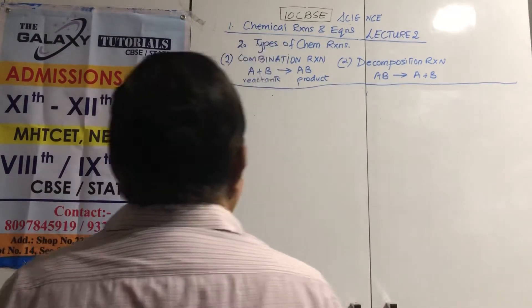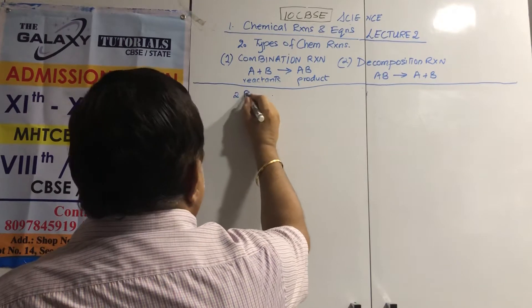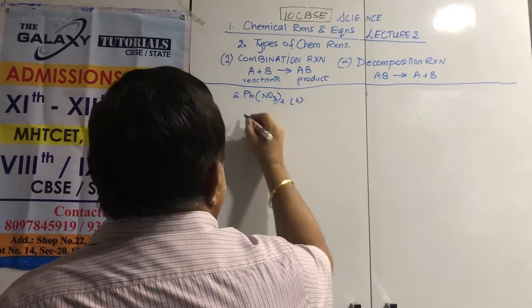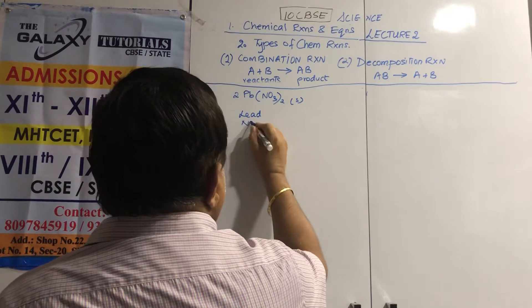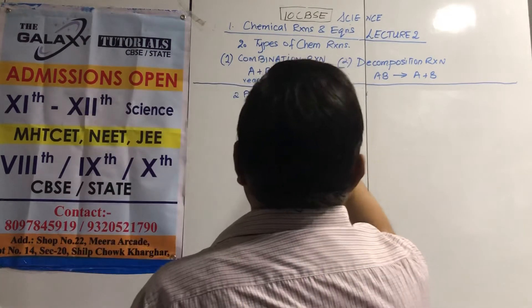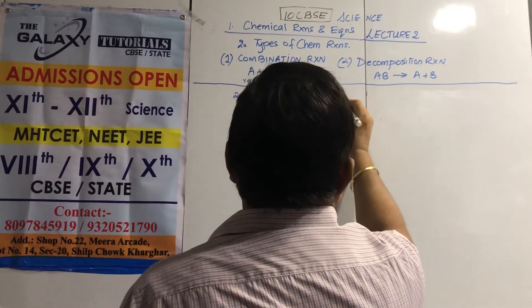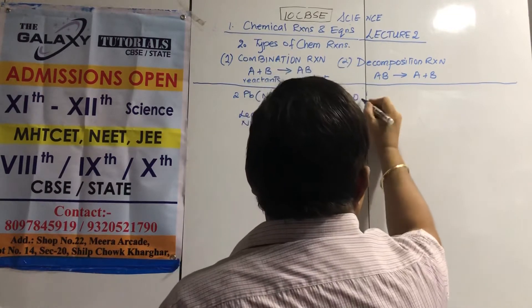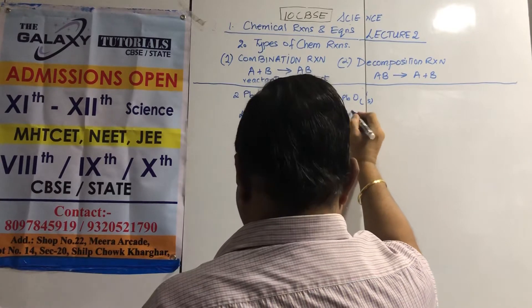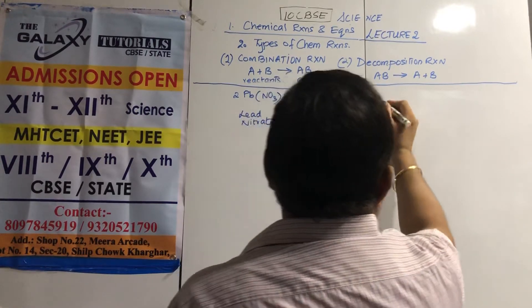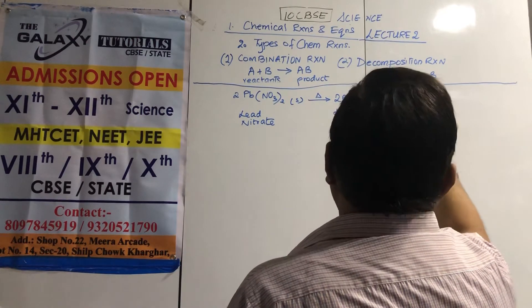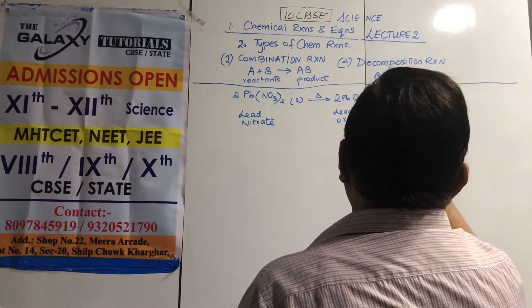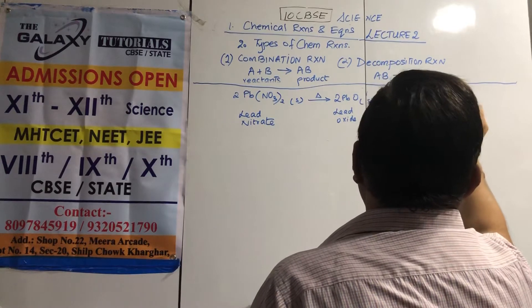Another example: lead nitrate, 2Pb(NO3)2 solid, when heated, gives lead oxide solid, plus 4 nitrogen dioxide gas, plus oxygen gas.